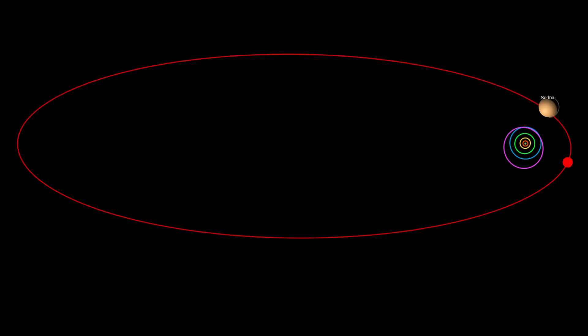At its farthest, Sedna drifts nearly 1,000 astronomical units away, taking more than 11,000 years to complete a single orbit.